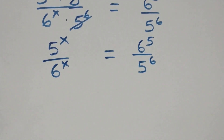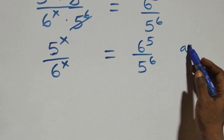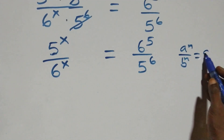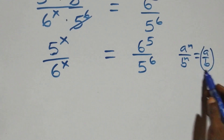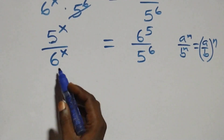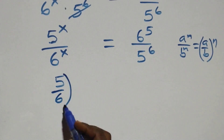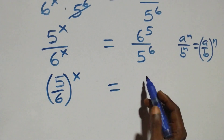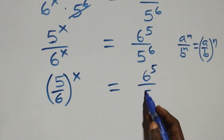From here we apply the log indices rule. When we have a raised to power n over b raised to power n, this is the same thing as a over b, all raised to power n. That is, we can rewrite the left side as 5 over 6, all raised to power x.